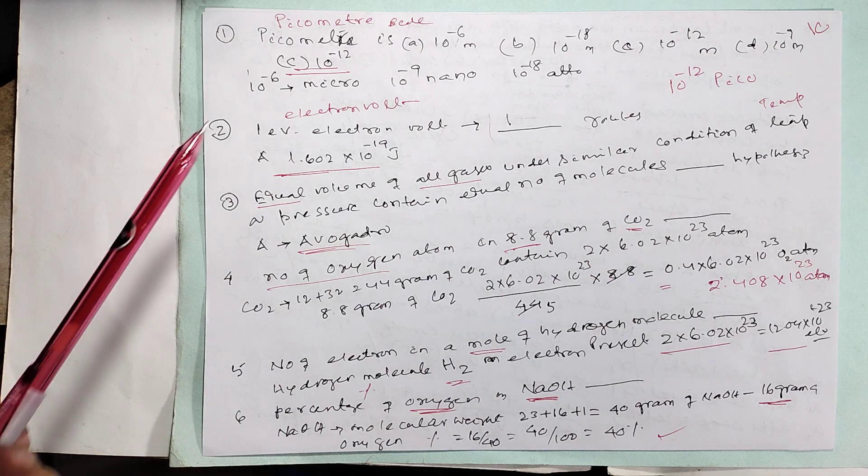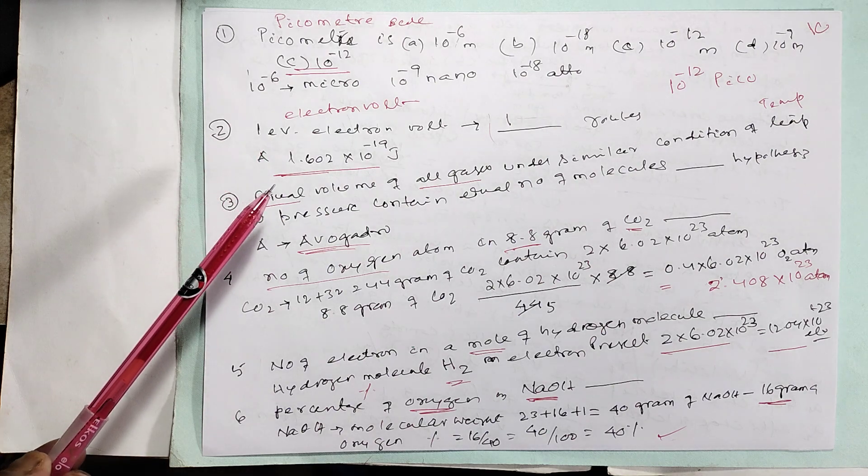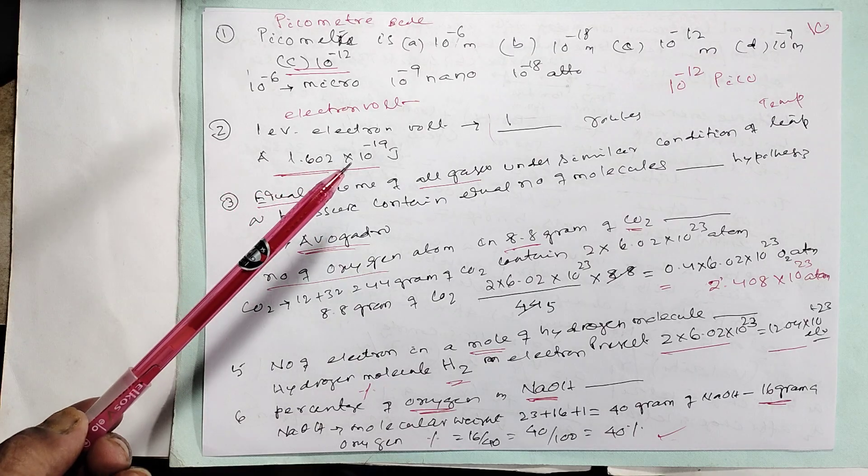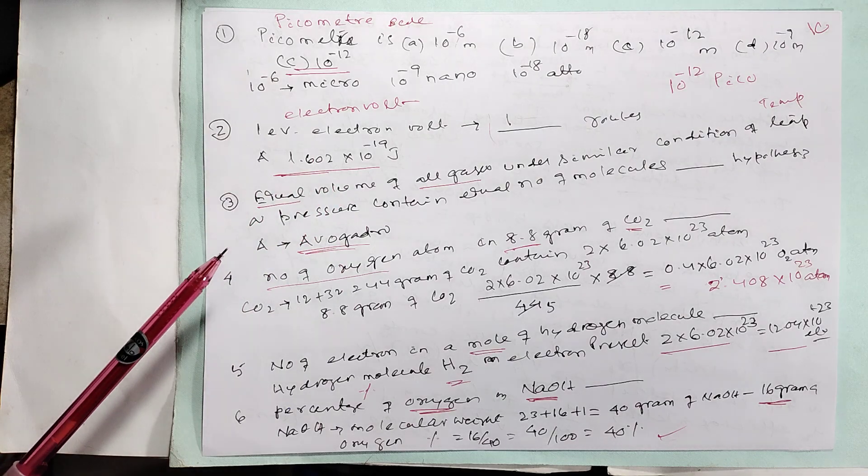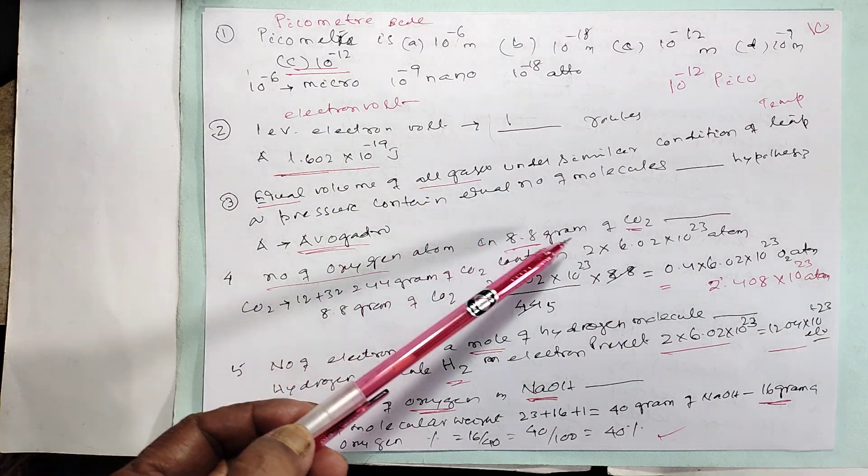Picometer is self-explanatory. Avogadro's law: equal volumes of all gases under similar conditions of temperature and pressure contain equal numbers of molecules. An important question: what is the number of oxygen atoms in 8.8 grams of carbon dioxide?